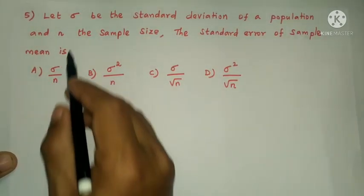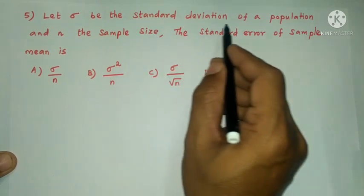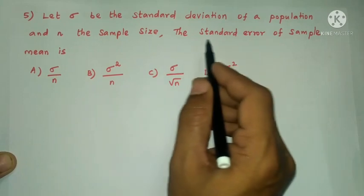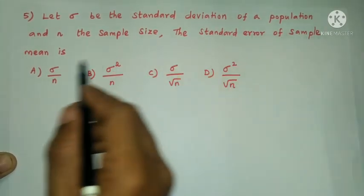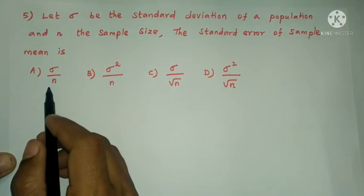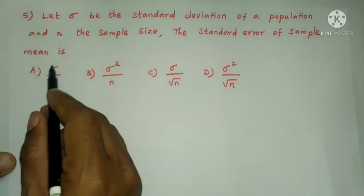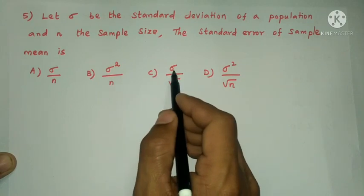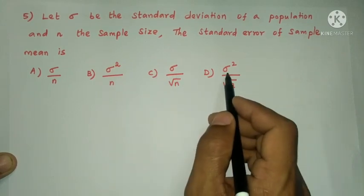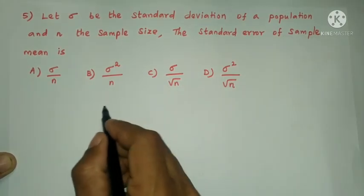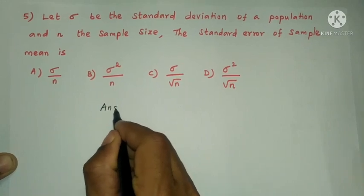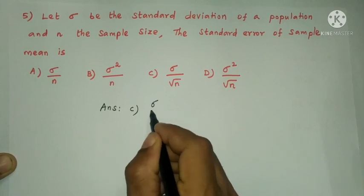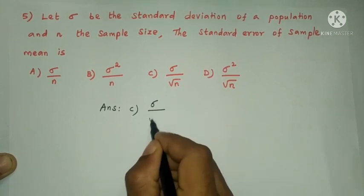Next question: let σ be the standard deviation of a population and n the sample size. The standard error of the sample mean is — Option A: σ/n. Option B: σ²/n. Option C: σ/√n. Option D: σ²/√n. The answer is option C: σ/√n.